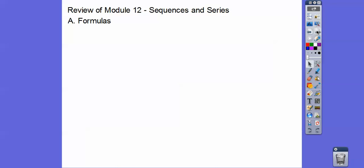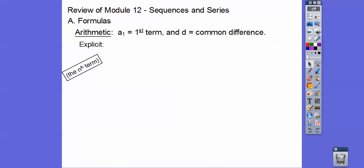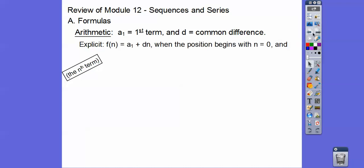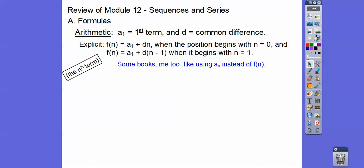Here are some formulas you've got to remember. The arithmetic sequence explicit formula gives us our nth term. A sub 1 is our first term and d is our common difference — how much we add to get to the next term. When n starts with 0, the formula is f(n) = a1 + dn, and when it starts with 1, we use n minus 1.